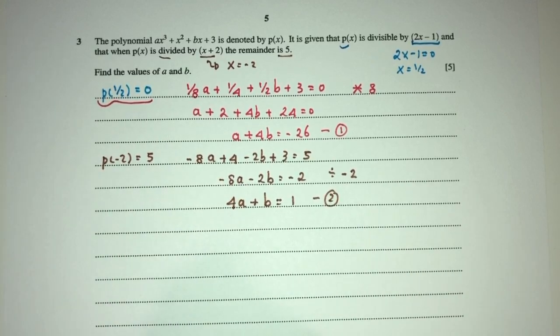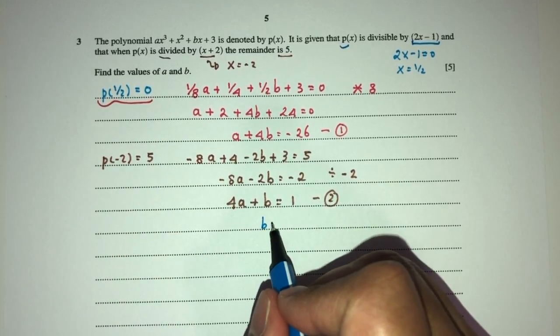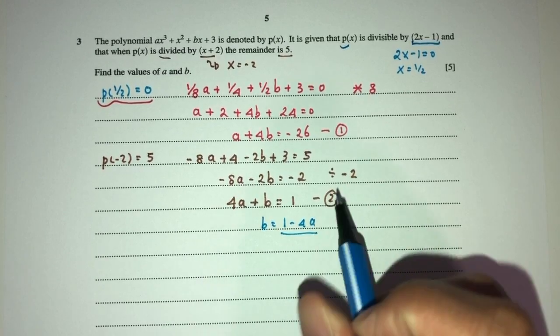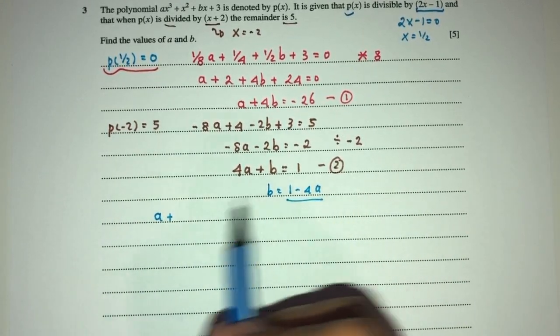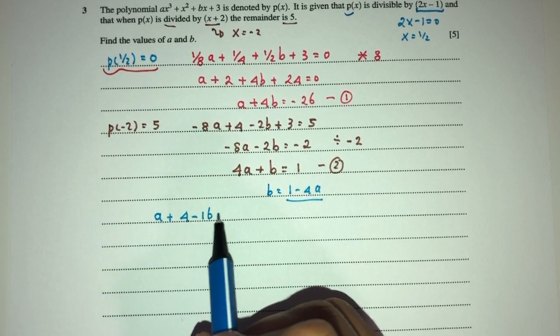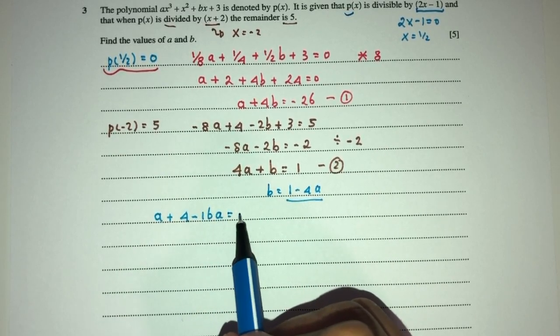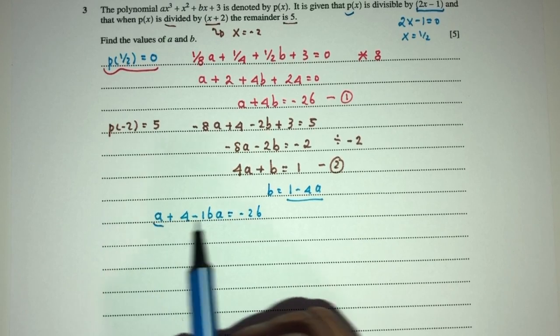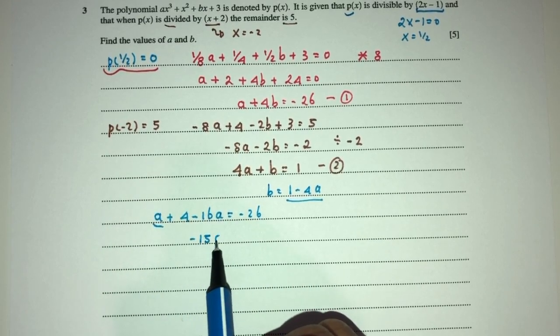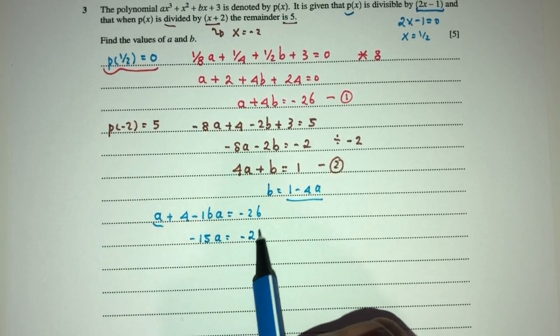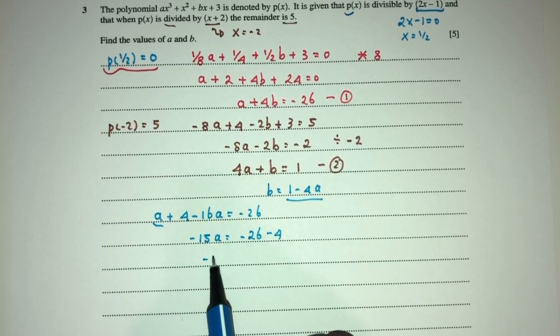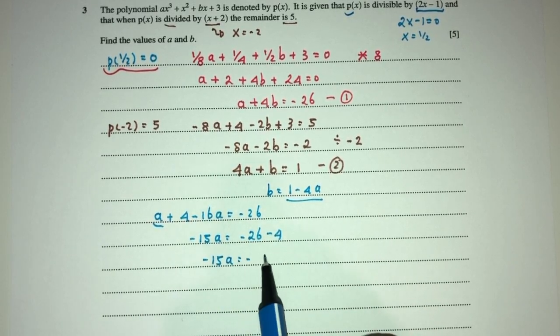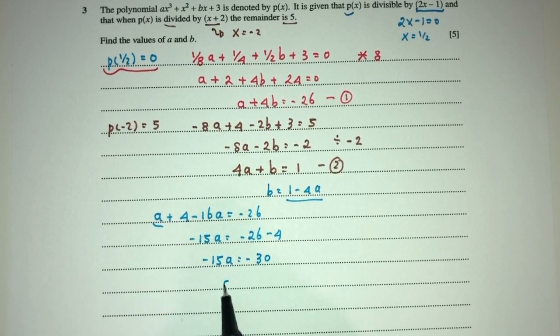Now we can make b become subject, so b will be 1 minus 4a. Replace right here, you will have what? a plus 4 times b, that will be 4 minus 16a, that will be minus 26. So a minus 16 should be minus 15a, and that should be the value of minus 26, and that should be minus 4. So minus 15 will be the value of minus 30, so a will be the value of 2.